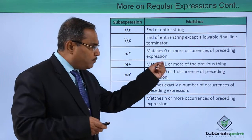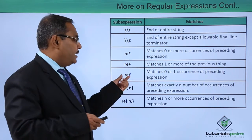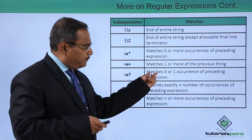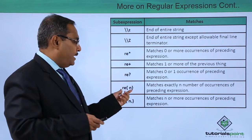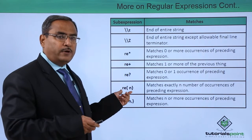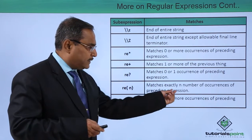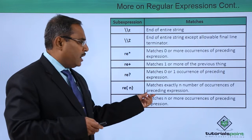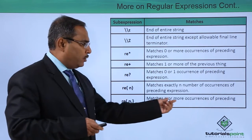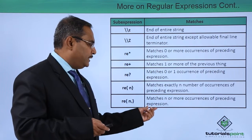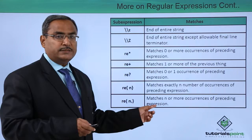`re+` matches 1 or more occurrences of the previous expression. `re?` matches 0 or 1 occurrence of the preceding expression. `re{n}` — where n is written within curly braces — matches exactly n number of occurrences of the preceding expression. `re{n,}` matches n or more occurrences of the preceding expression.